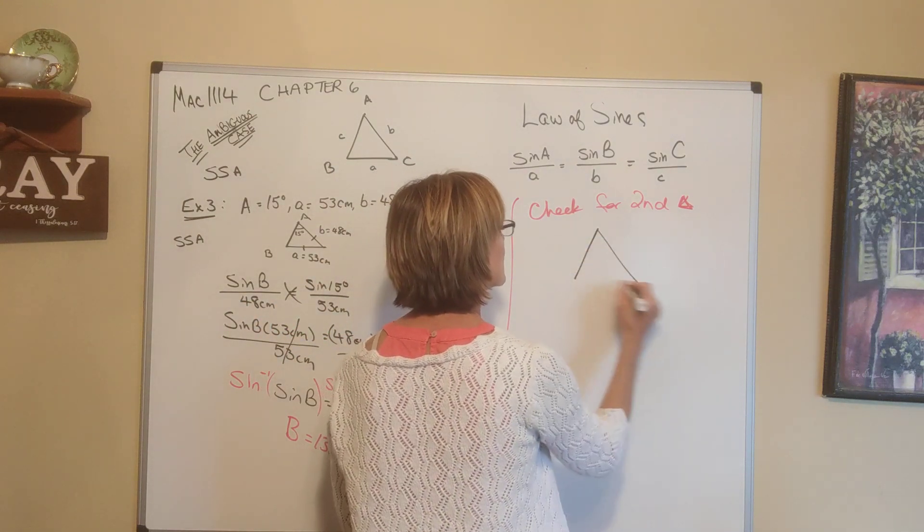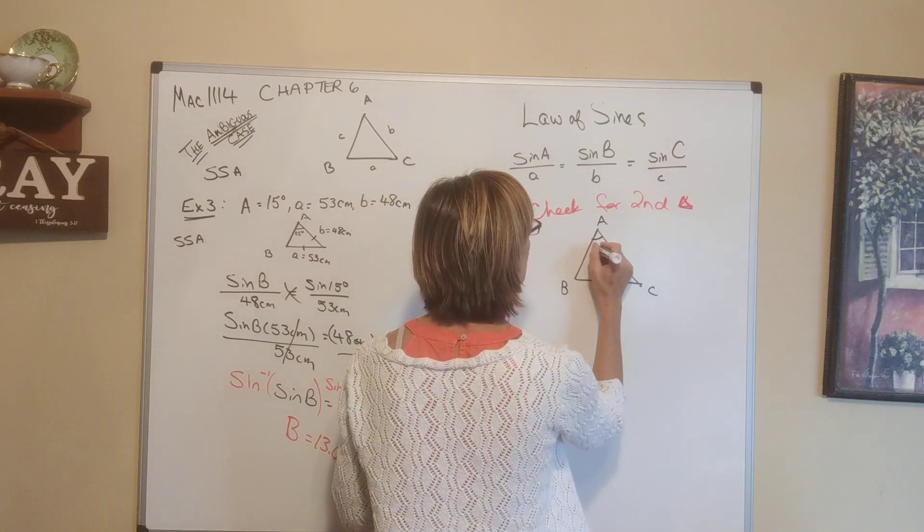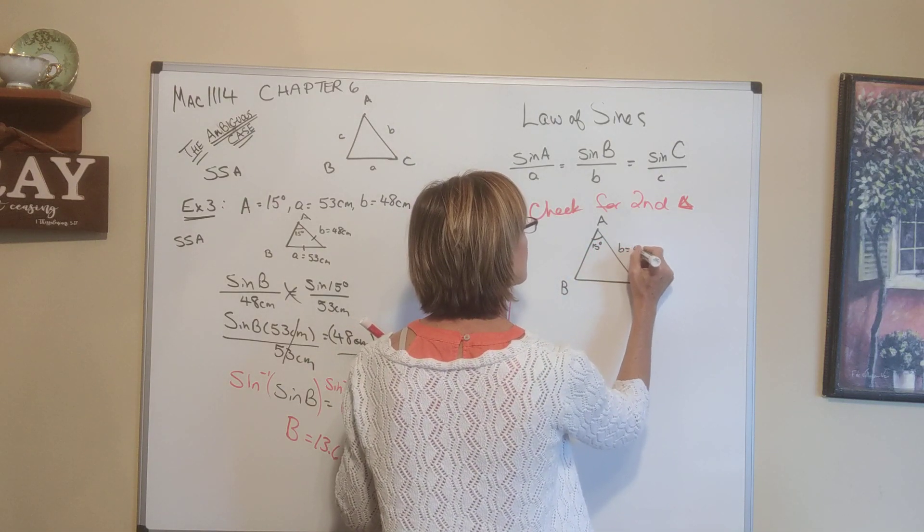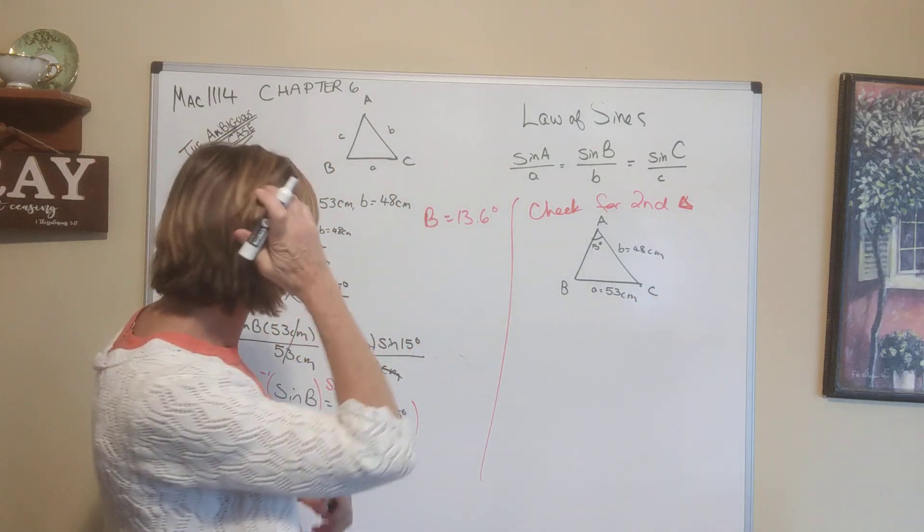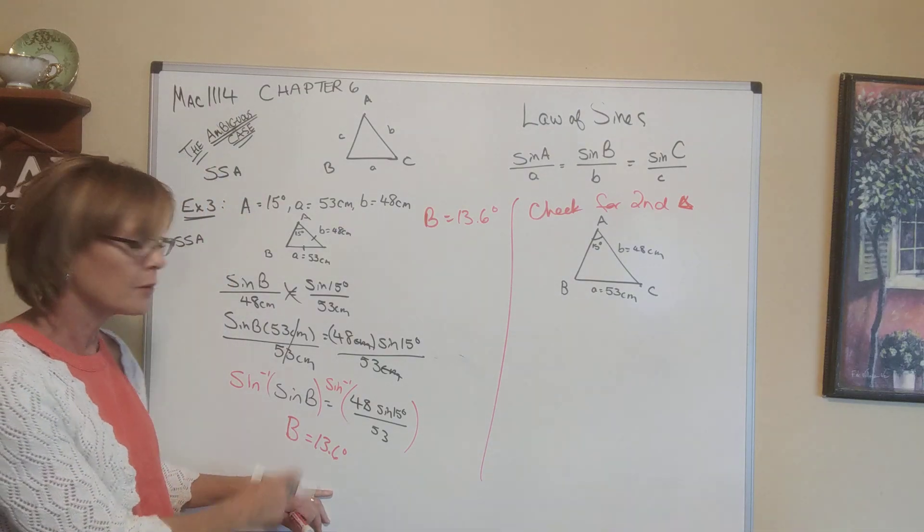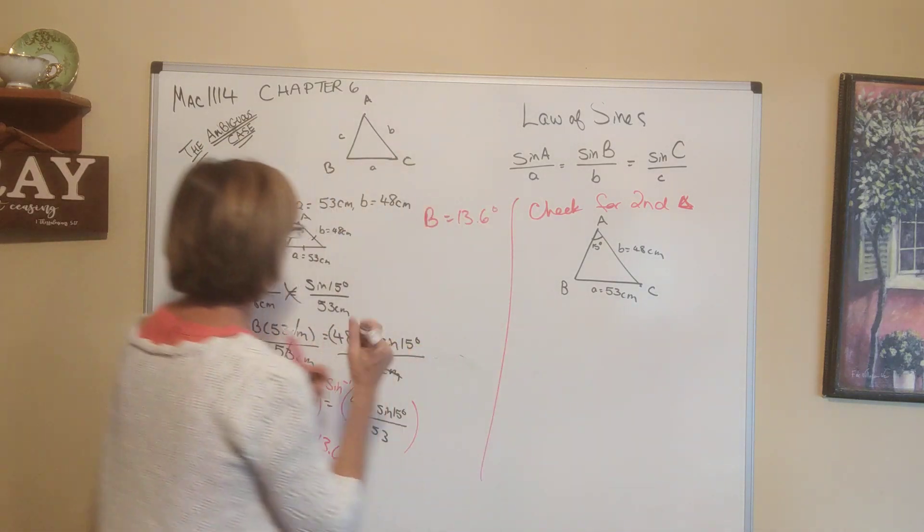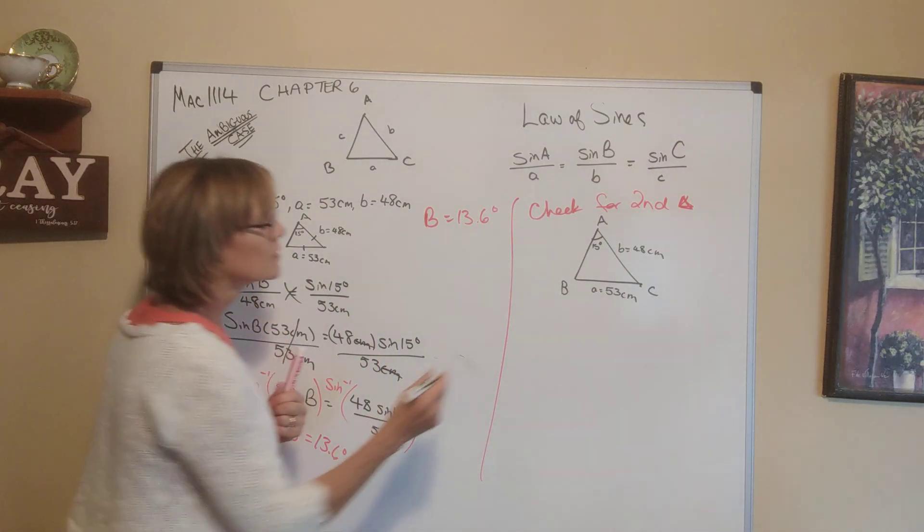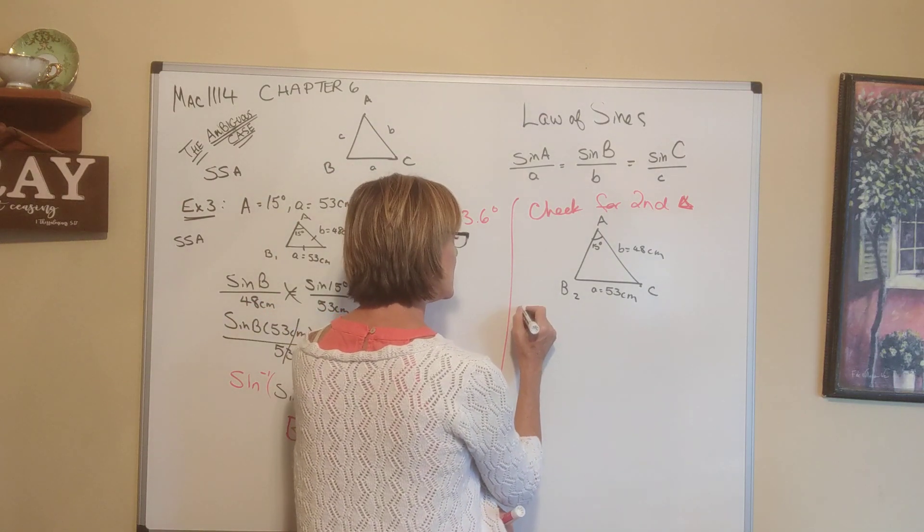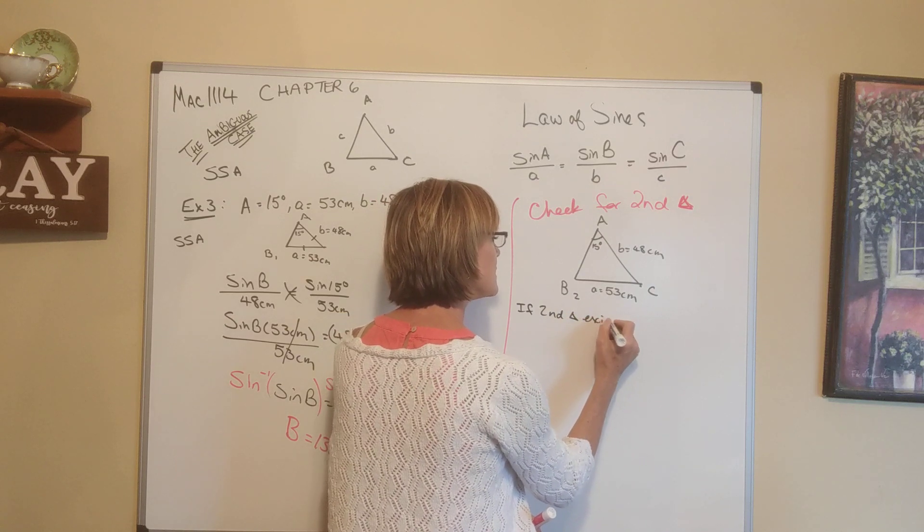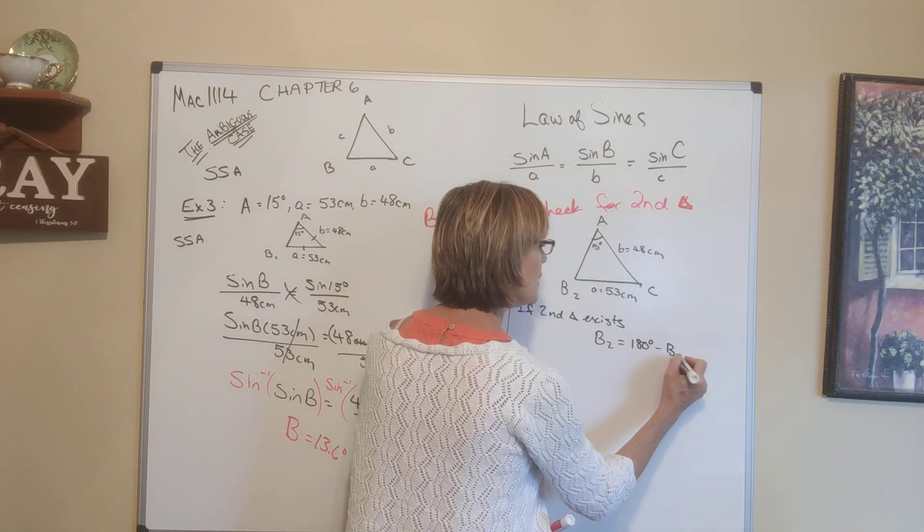So this is the potential. We would do this. Let us draw the given information again. A, B, C, what does it have? A was 15 degrees. B is 48 centimeters. A is 53 centimeters. Okay, that's what they give us. Now we just discovered we can make one triangle with this B. We're going to finish that. Do two triangles exist? I don't know. So what we do is, I'm going to label this B1 because potentially there's two triangles. So I'm going to label this B2. What would B2 be? B2, if it exists, if second triangle exists, then B2 would equal 180 degrees minus B1. That's the possibility.